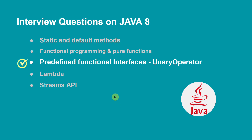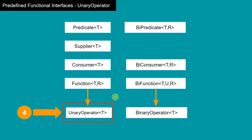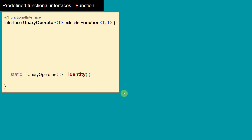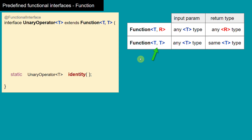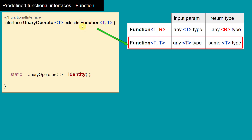We are covering predefined functional interfaces, and in this video we are going to see the fourth one, which is UnaryOperator. UnaryOperator is a child interface of the Function functional interface. UnaryOperator extends Function, and in our previous video we saw that Function can take an input parameter of any type and return any type as its return value — written as Function<T, R> where T is the input type and R is the return type.